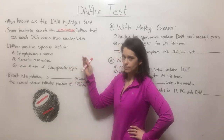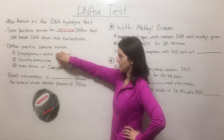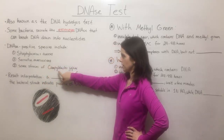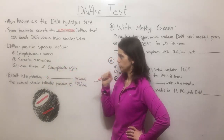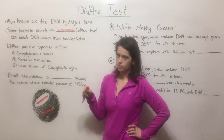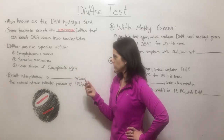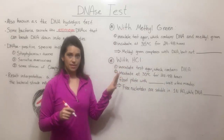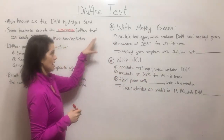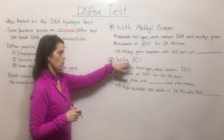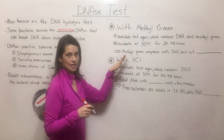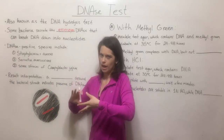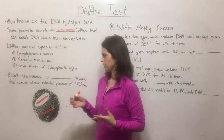Some species of bacteria that can do this are Staphylococcus aureus, Serratia marcescens, and some strains of Campylobacter jejuni — all of these are known to cause disease in humans and are clinically relevant. There are two methods to carry out the DNase test: one with methyl green and one with hydrochloric acid. Before we talk about the two individual methods, let's talk about how results are analyzed, because it's pretty similar.